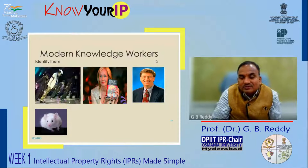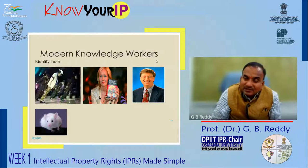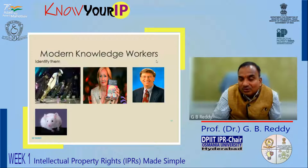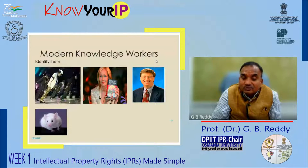Bill Gates became one of the wealthiest men in the world by exploiting intellectual property rights — copyrights in computer programs, patents in business methods and operating systems. Then there is a non-human being: Howard Oncomouse, created by two scientists at Harvard for conducting oncology or cancer-related experiments, which was patented in the USA in 1988. The patentees' names are Philip C. Ledder and Timothy Stewart.